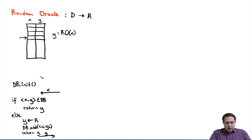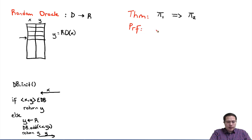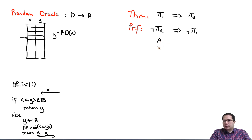Random oracle is essentially a proof strategy. The types of theorems we prove take the form: if scheme pi1 is secure or assumption pi1 holds, then scheme pi2 is also secure. Our proof strategy is by contrapositive: if scheme pi2 is broken — if there exists a probabilistic polynomial-time adversary A that breaks scheme pi2 — then we show scheme pi1 is also broken by constructing a probabilistic polynomial-time adversary B that breaks scheme pi1.